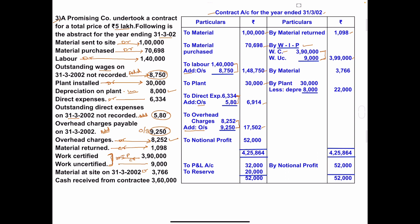Material at site on 31st March 2002 is to be credited — material amount is ₹3,766. By plant: starting value of the plant is ₹30,000, written on the credit side. Less depreciation on plant: ₹8,000. So 30,000 minus 8,000 gives ₹22,000.